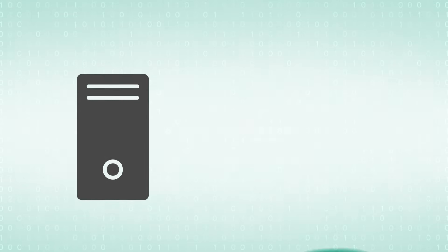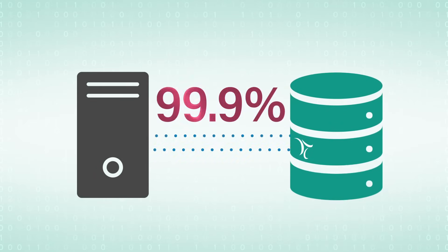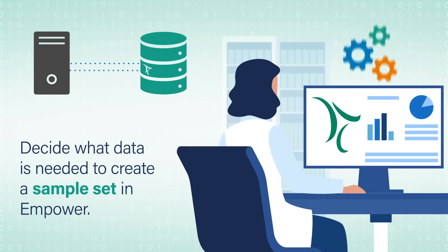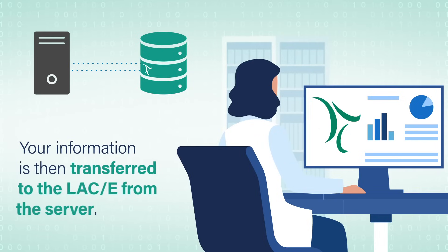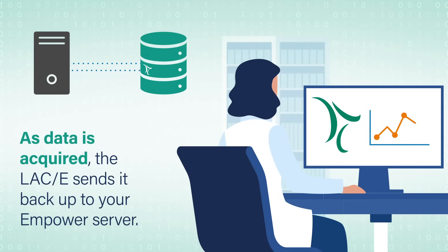Your LACE is able to communicate to the server without interruption 99.9% of the time. Decide what data is needed to create a sample set in Empower. When created, that method is stored on the server. You can then begin acquisition, in which information is transferred to the LACE from the server. As data is acquired, the LACE sends it back up to your Empower server.